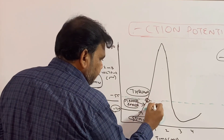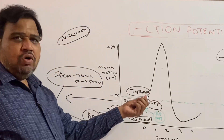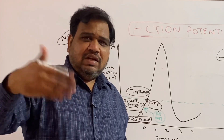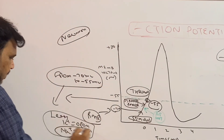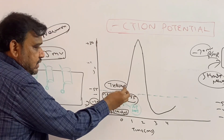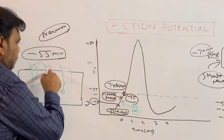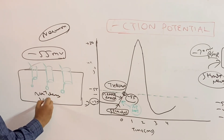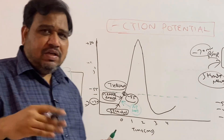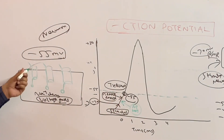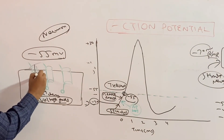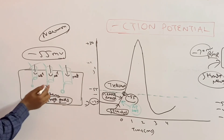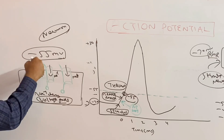That is why I call this the threshold at minus 55. Once this threshold potential is reached, the firing state is reached. The sodium channels start to open. These are voltage-gated sodium channels — so the voltage-gated sodium channel starts opening from minus 55 millivolts. Sodium will be coming in; the sodium channels open and the gates are open.